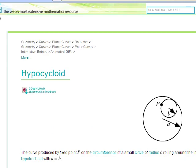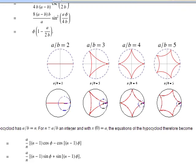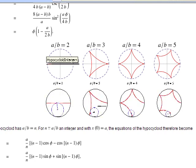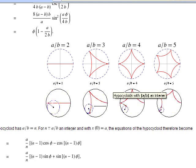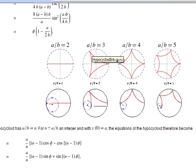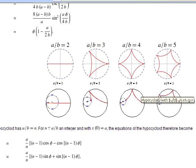Now here's the hypocycloid. The moving circle again has a radius of B. The stationary circle has a radius of A. The pencil is located at the point marked P. But in this case, the moving circle is on the interior of the stationary circle. The shapes also have certain names. Obviously, the first one is a straight line. And that is generated when the stationary circle has a radius that's twice that of the inner circle. The next shape is called a deltoid. Here, the ratio of the two radii is 3. And then you have the asteroid. Again, you're seeing cusps that's characteristic of these curves.